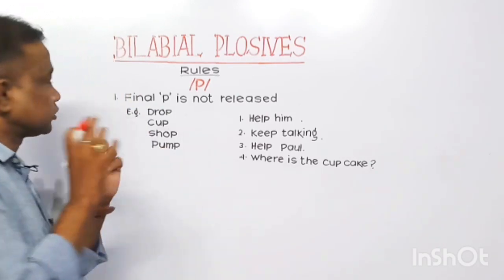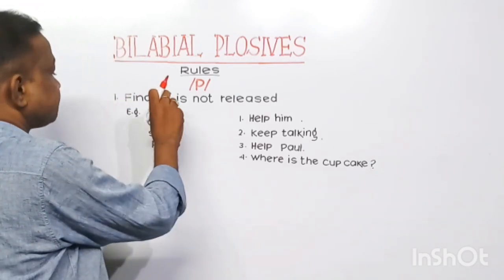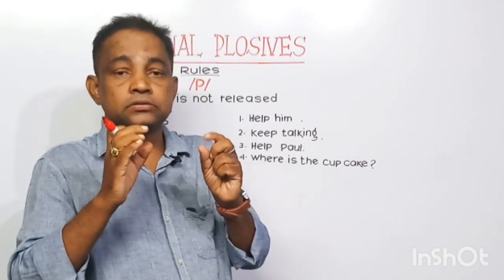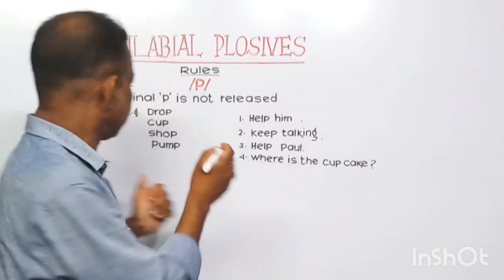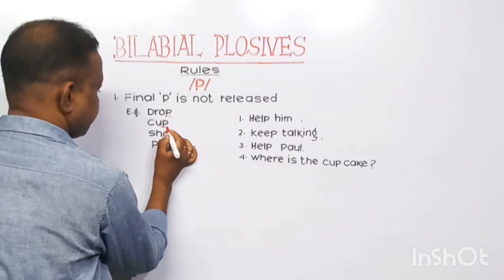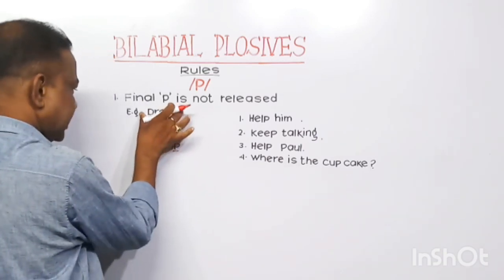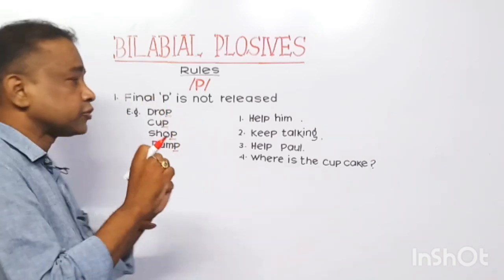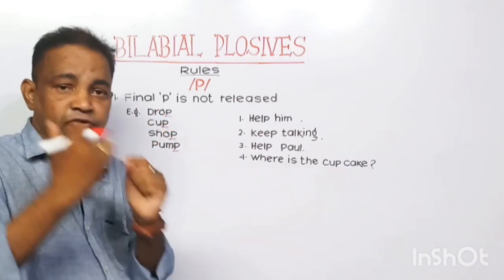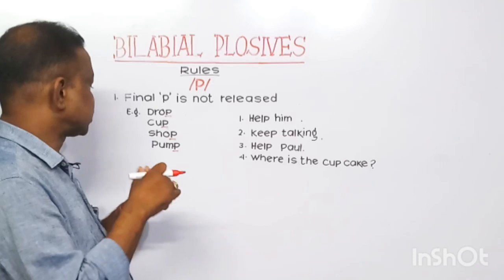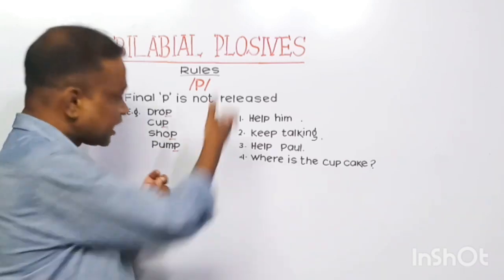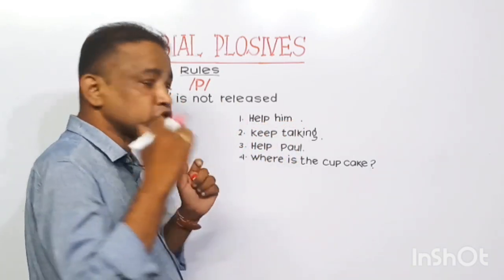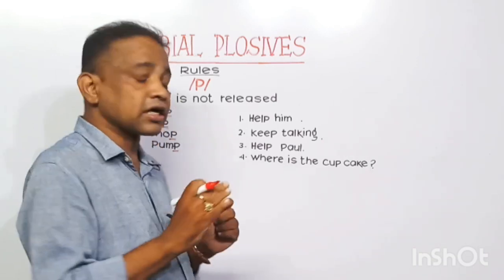Let us discuss some rules for /p/. Rule number one: final /p/ is not released. That means if a word ends in the sound /p/, the sound should not be released. For example, D-R-O-P, C-U-P, S-H-O-P, P-U-M-P — these words end in the sound /p/. So when pronouncing them, you have to hold and not release the sound /p/: drop, cup, shop, pop. Example sentences: Help him, Happy, Keep talking, Apple, Where is the cupcake?